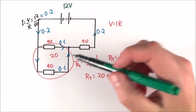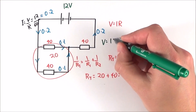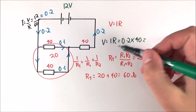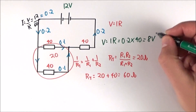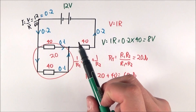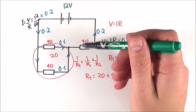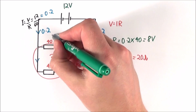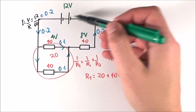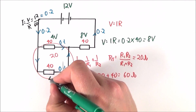For the potential difference across the 40 ohm series resistor, using V equals IR: 0.2 times 40 gives 8 volts. Applying Kirchhoff's second law — the sum of EMFs equals the sum of PDs around any closed loop — with a 12 volt EMF and 8 volts across the series resistor, that leaves 4 volts across the parallel combination. The PD is equal across both parallel branches.